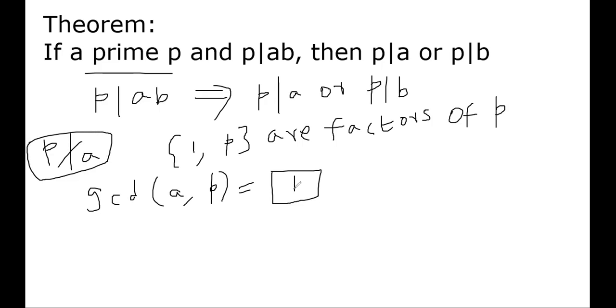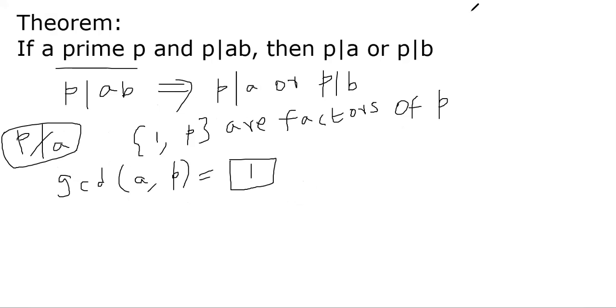And now we can make use of another proposition we proved earlier using extended Euclidean algorithm. Remember this: if you have a number c which divides a times b, and gcd of c and a is equal to 1, then your c must divide b. We proved it earlier using the basic division algorithm property and the extended Euclidean algorithm concept. So we are making use of this fact now.